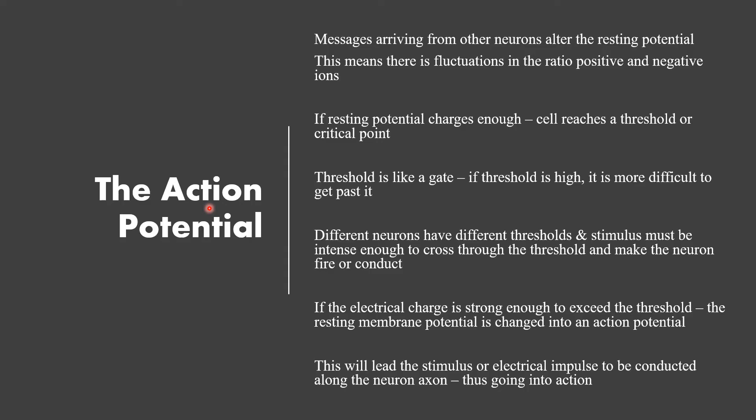Next we have action potential. Messages arriving from other neurons after resting potential cause a fluctuation in the ratio of positive and negative ions. If the resting potential changes enough, the cell reaches a threshold — a critical point which acts like a gate. Different neurons have different thresholds, and a stimulus must be intense enough to cross the threshold and make the neuron fire. If the electrical charge is strong enough to exceed the threshold, the resting membrane potential is changed into an action potential, causing the electrical impulse to be conducted along the neuron's axon.